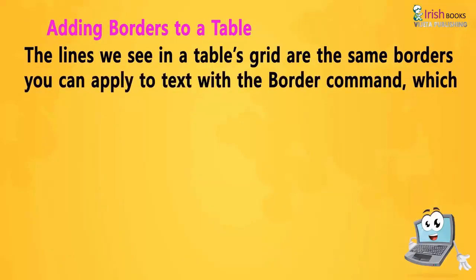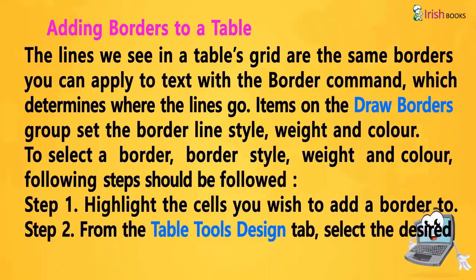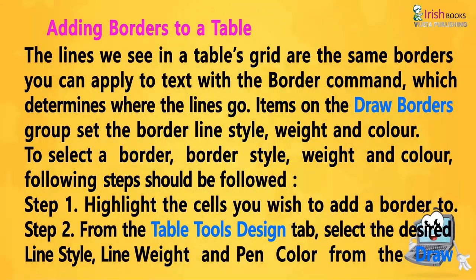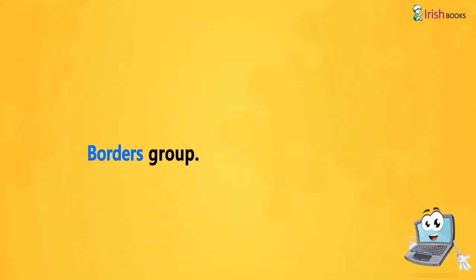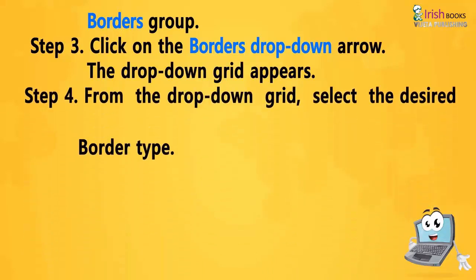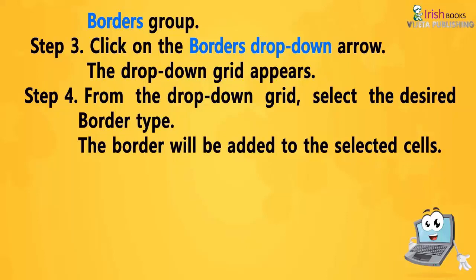Adding Borders to a table. The lines we see in a table grid are the same borders you can apply to text with the border command, which determines where the lines go. Items in the Draw Borders group set the border line style, weight and color. To select a border style, weight and color, following steps should be followed. Step 1: Highlight the cells you wish to add a border to. Step 2: From the Table Tools Design tab, select the desired line style, line weight and pen color from the Draw Borders group. Step 3: Click on the Borders drop-down arrow. Step 4: From the drop-down grid, select the desired border type. The border will be added to the selected cells.